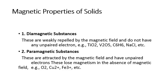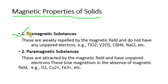We'll start with the topic of magnetic properties of solids. In the last lecture, lecture number 11, we covered electrical properties: conductors, insulators, semiconductors. Now we are going to cover magnetic properties. The first type is diamagnetic substances.